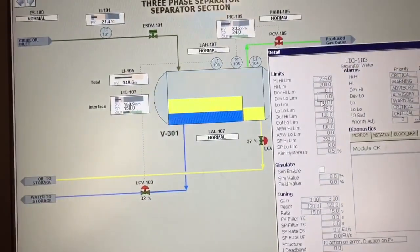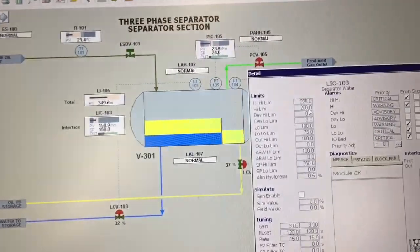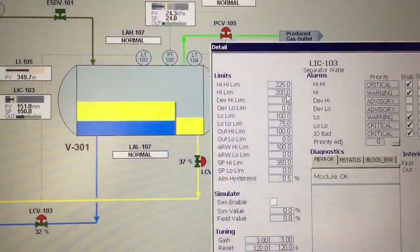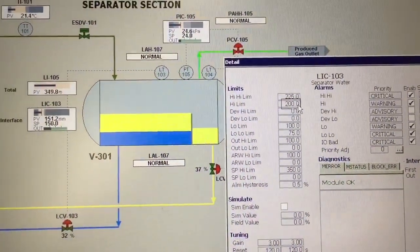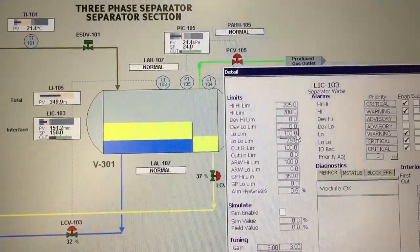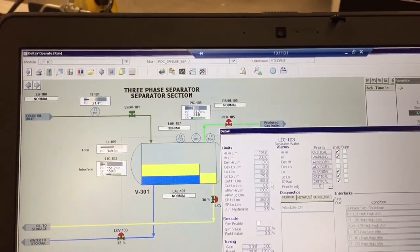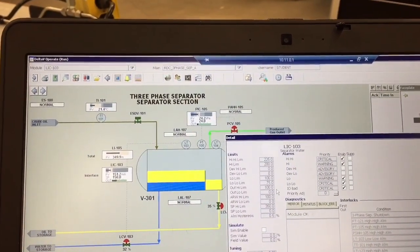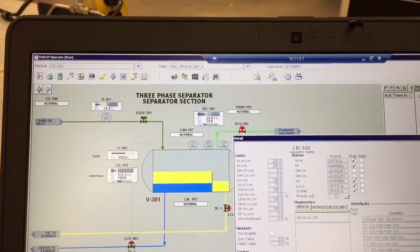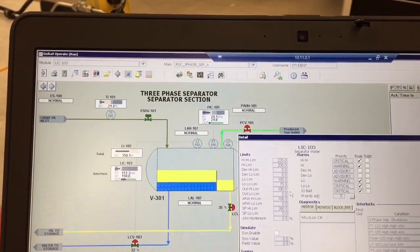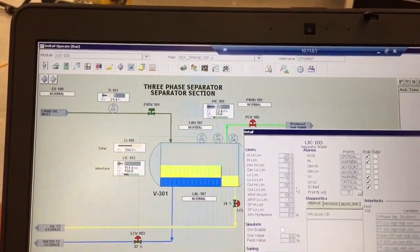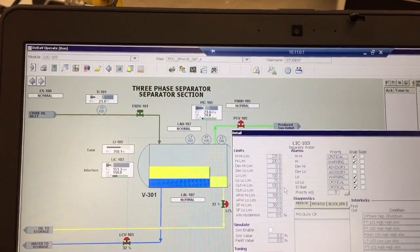Also notice here our high alarm. Our first high alarm rings in at 200 and our low rings in at 100. So we only have 100 millimeters to play here, about 4 inches of room. If we go outside those limits, if we go too high, our interface probe can't measure the interface. There needs to be a minimum of 4 inches on top of the water for it to measure properly.